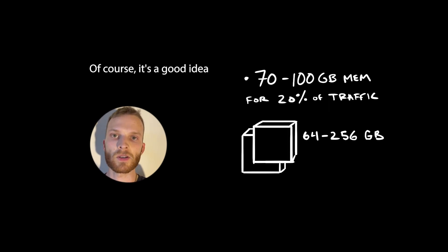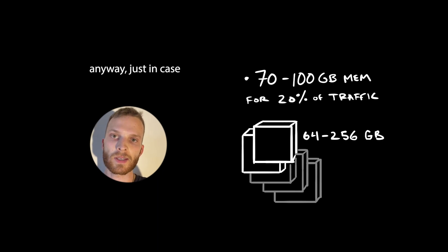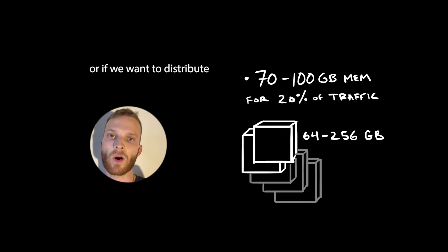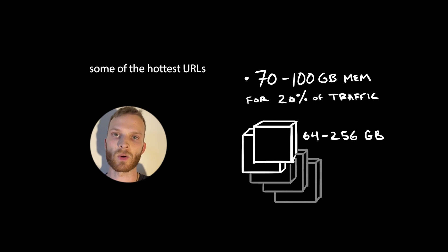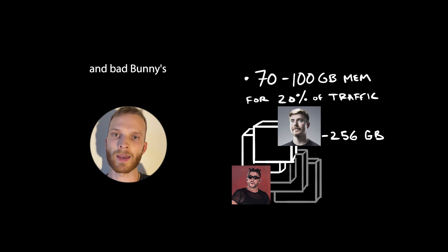It's a good idea to add redundancy here anyway, just in case we need a backup, or if we want to distribute some of the hottest URLs between multiple machines — say, MrBeast's merch link on machine 1 and Bad Bunny's OnlyFans on machine 2.